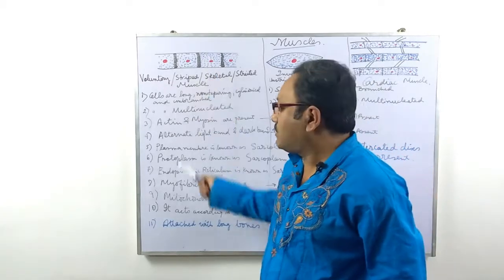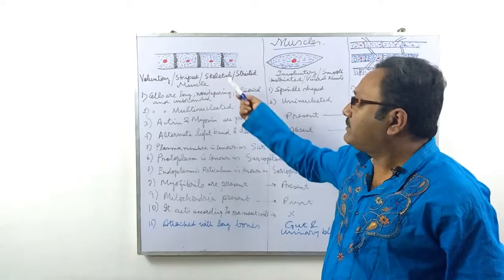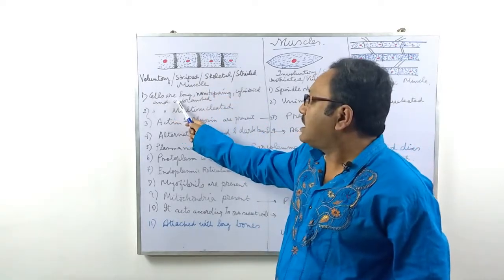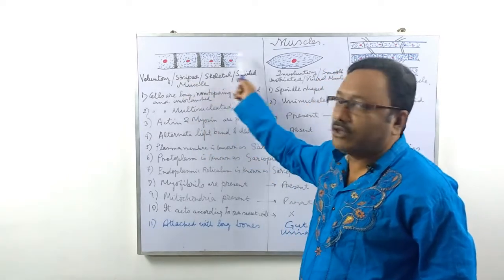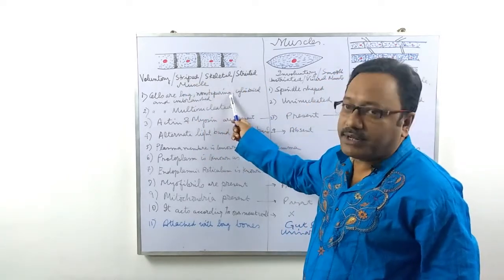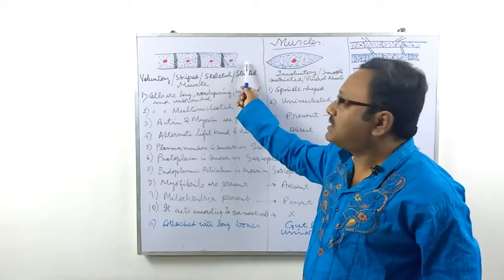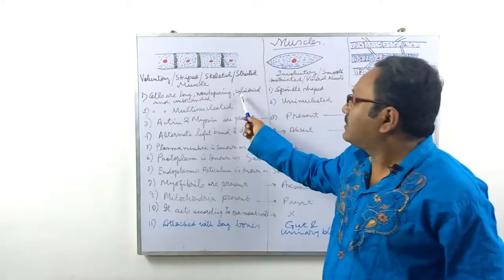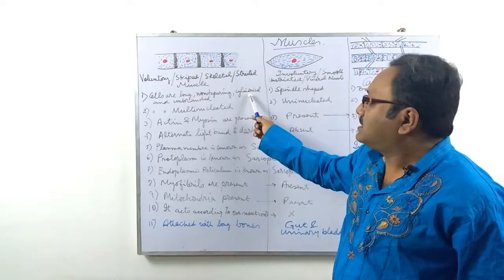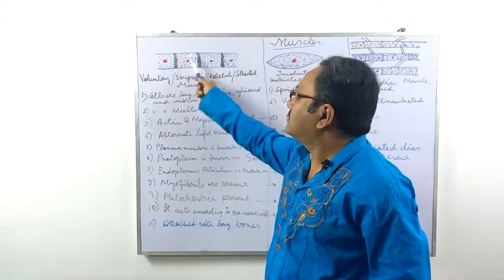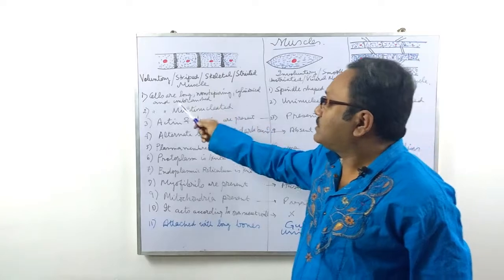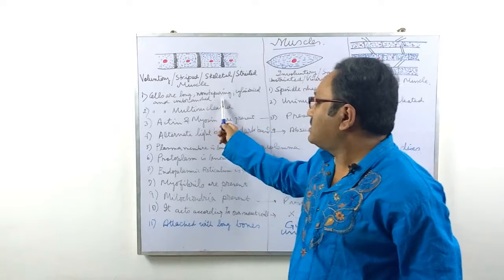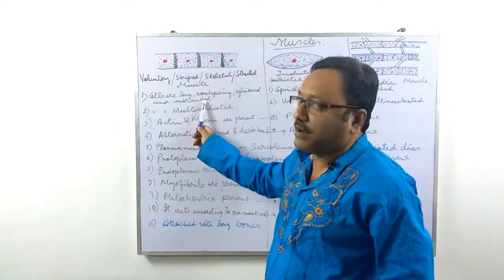Now let us check out the important points related to the voluntary muscle. Point number one: cells are long, non-tapering — meaning not pointed at both ends — cylindrical and unbranched, so no branching is there.